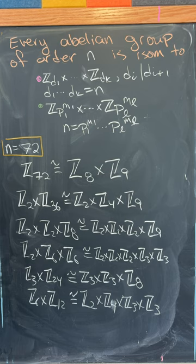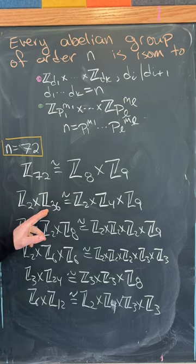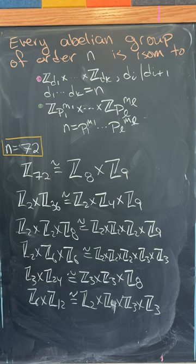For instance, if n is equal to 72, you get six Abelian Groups. You have Z72, which is Z8 cross Z9. You get Z2 cross Z36, which is Z2 cross Z4 cross Z9. And then you get these other ones as well.